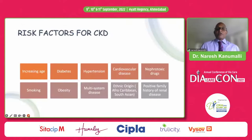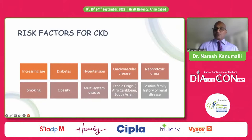The risk factors for CKD include increasing age, diabetes, hypertension, cardiovascular disease, nephrotoxic drugs, smoking, obesity, multisystem disease, and ethnic origin — particularly South Asian and Afro-Caribbean populations. A positive family history of renal disease is also a significant risk factor.